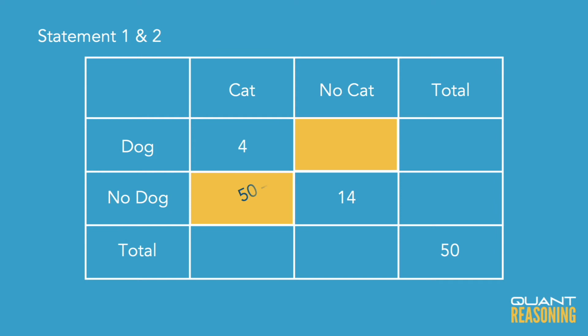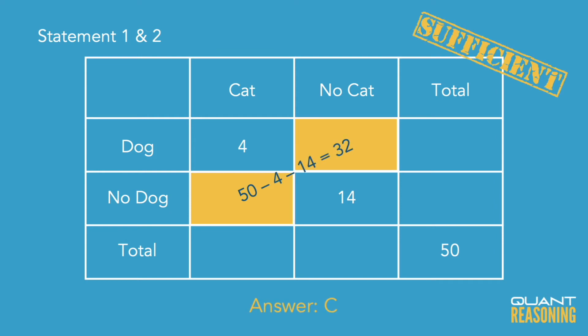I don't know the breakdown of those 32 — I don't know how many are 'dogs and no cats' and how many are 'cats but no dogs' — but I don't need to know that. The question wasn't asking for those individual cells; it was asking for their sum. We can say definitively that their sum is 32, and therefore the correct answer is C.